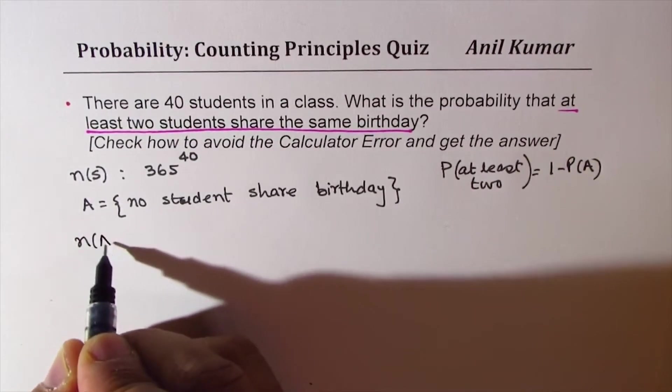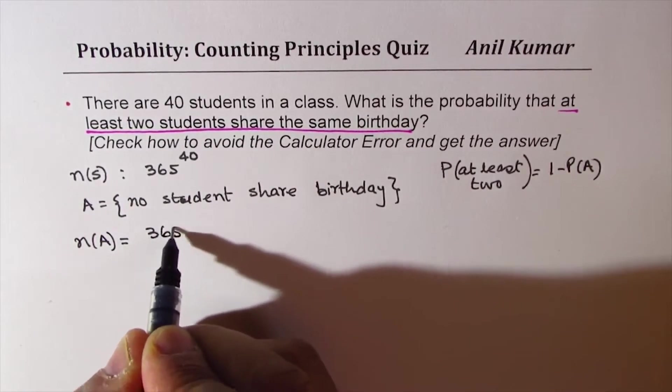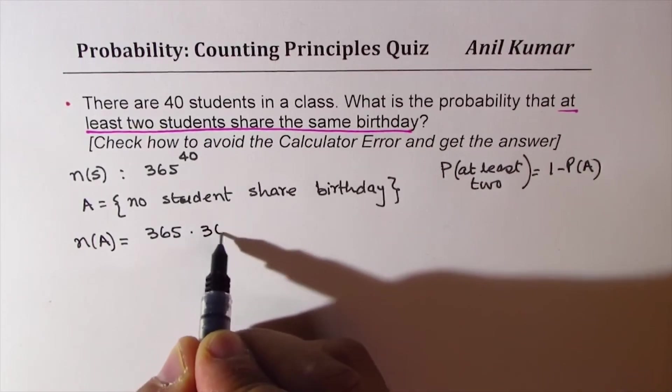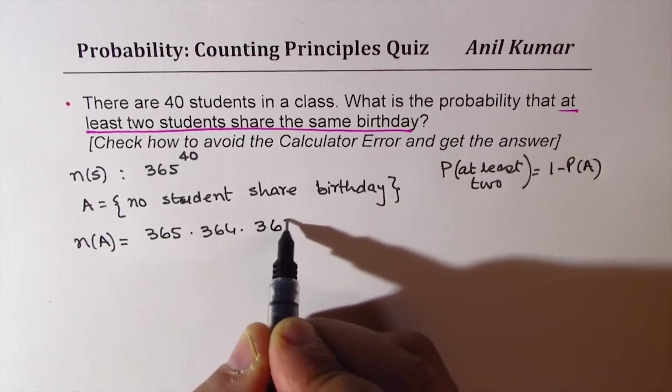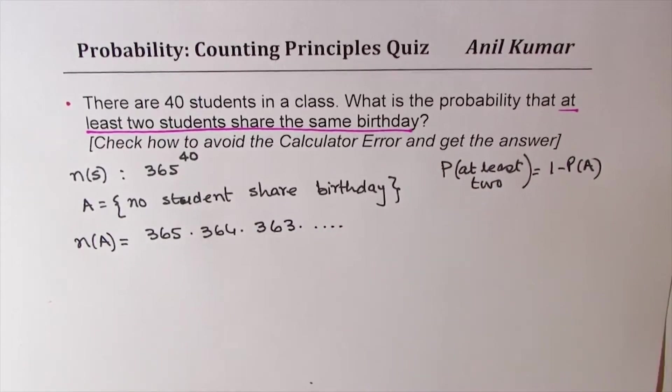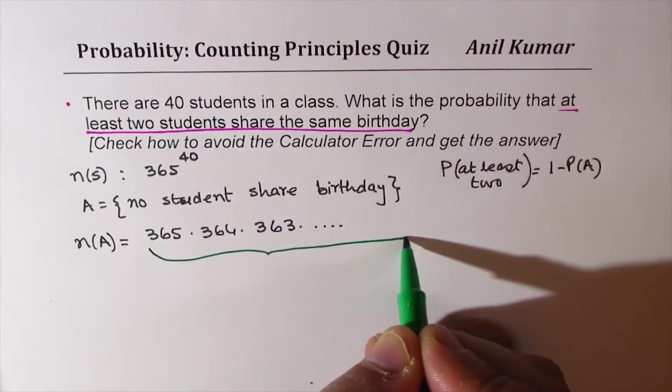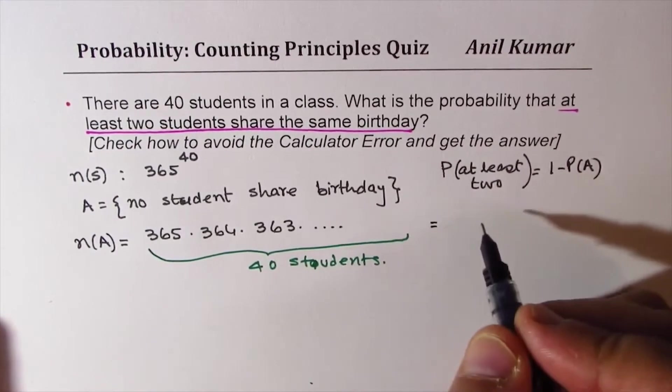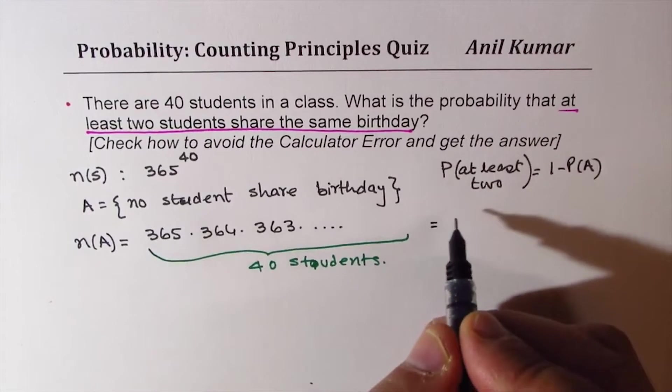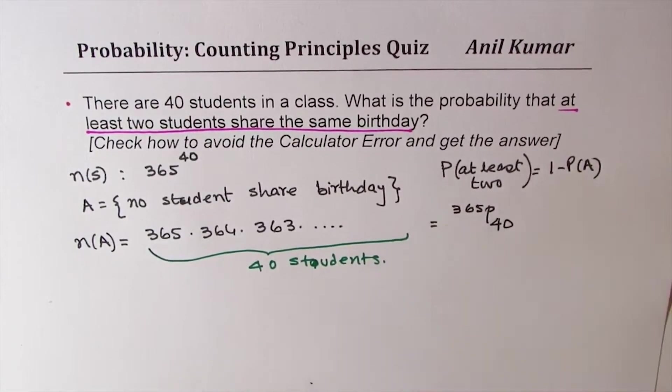To find the total number, the first student has 365 choices. Now, once that is done, we are left with 364. Once that is done, we are left with 363 and so on. So this is for all 40 students, which I could write in permutation form as out of 365, we are selecting 40 items. Any 40 days. That is what you get.